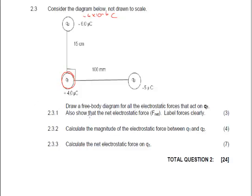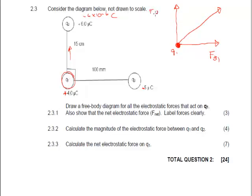We're drawing a free body diagram — also show the net electrostatic force and label the forces clearly. Q1 is positive and Q2 is negative, so Q1 is attracted toward Q2. Q3 is also negative, so Q1 is attracted toward Q3 as well. Completing the parallelogram — or forming a triangle — gives us the resultant net force direction.